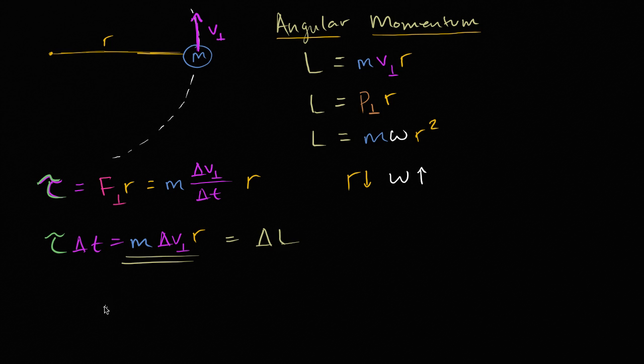And there's a complete analogy to what you might remember from the translational world. In the translational world, you have this notion, if you take your force and you multiply it times how long you're applying the force, actually, let me do this in a different color. So you multiply it by how long you are applying the force, so this quantity we often call impulse, that's going to be equal to your change in translational momentum. Your change in translational momentum.